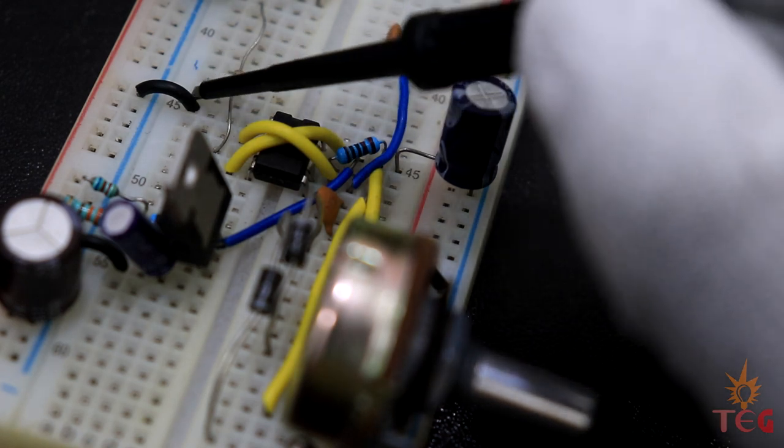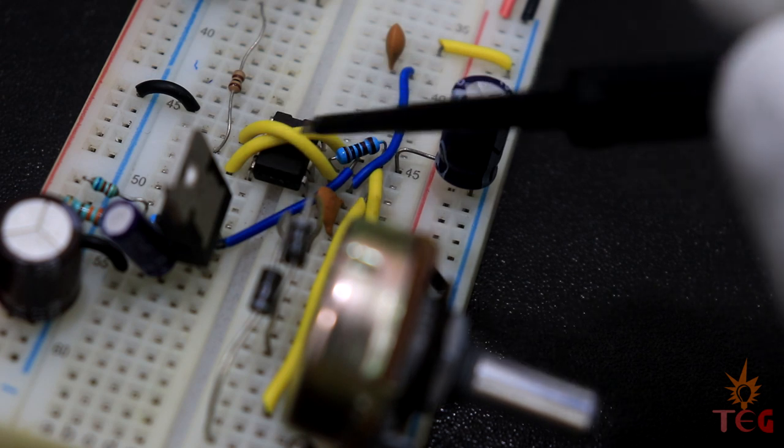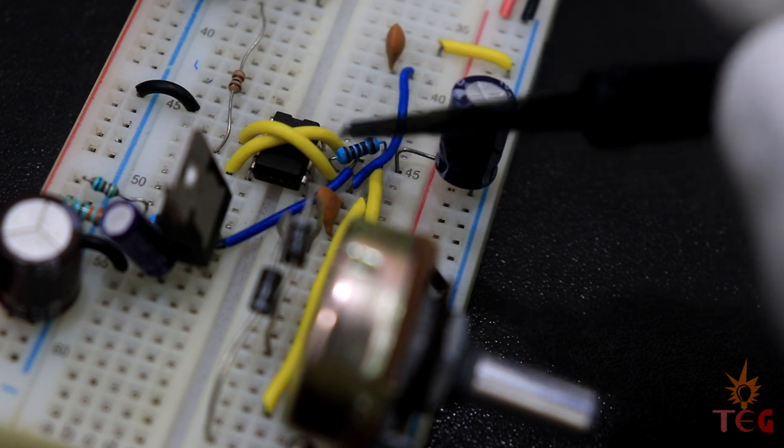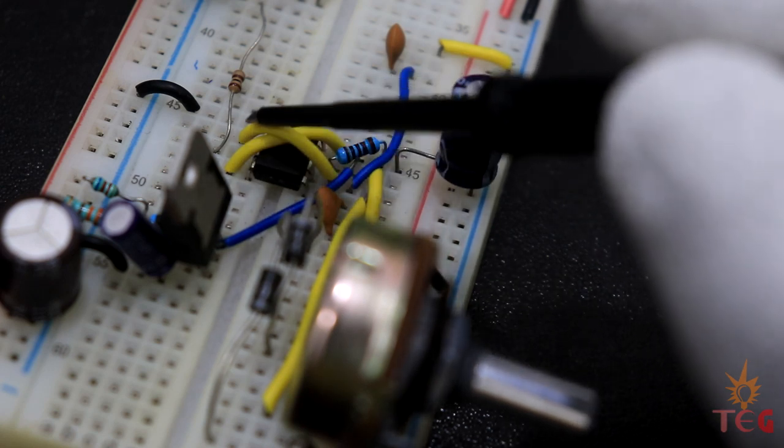First pin of the IC is grounded. Second and sixth are connected together, likewise fourth and eighth. This 220 microfarad capacitor smooths out the incoming 9 volts.